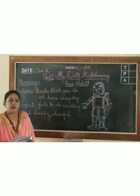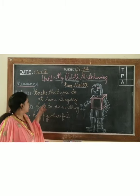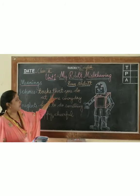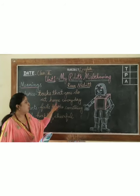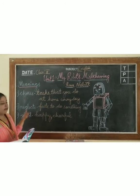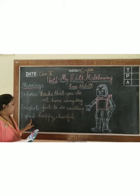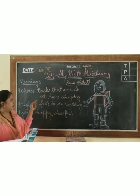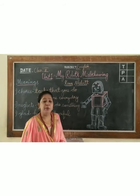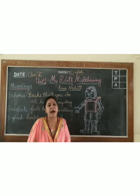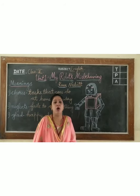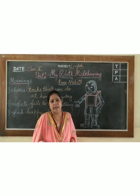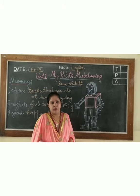Before we start the poem, let us understand the meanings. "Chores" means a task or work that you do at home every day. "Neglects" means fails to do something. "Glad" means happy or cheerful. "Robo" means a man-made machine that is designed to do things that humans do. "Misbehaving" means not obeying or not listening.